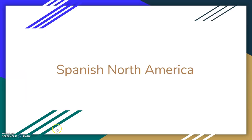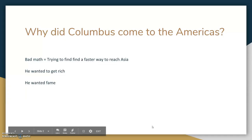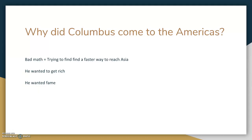Spanish in North America. So why did Columbus come to America? First off, it was basically bad math. He was trying to find a faster way to reach Asia, and he thought the Earth was much smaller than it actually was.